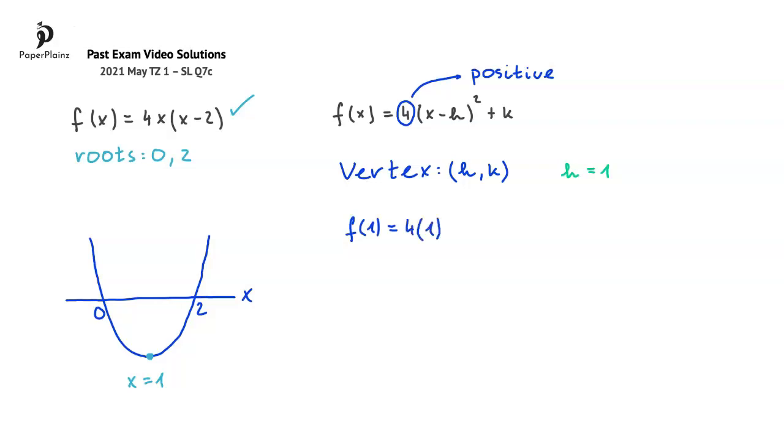Substituting, we get 4 times 1 times 1 minus 2, which is equal to 4 times 1 times negative 1, so negative 4. Therefore, the value of k is negative 4.